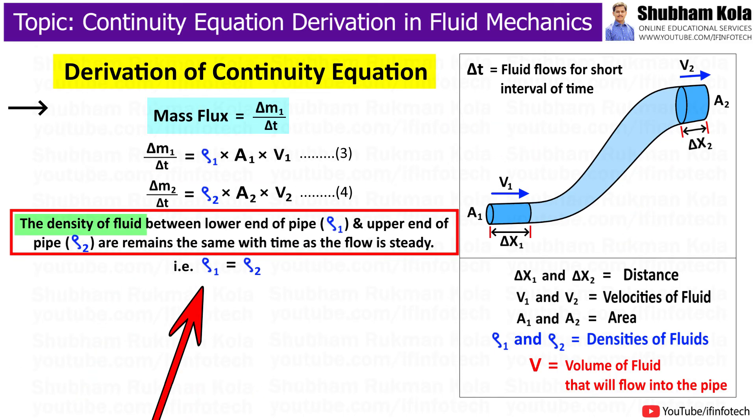Now, in this pipe, the density of fluid between lower end of the pipe, that is rho 1, and upper end of the pipe, that is rho 2, remains the same with time as the fluid flow is steady.